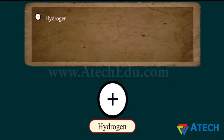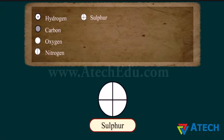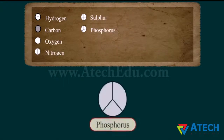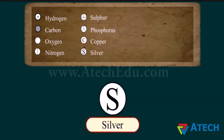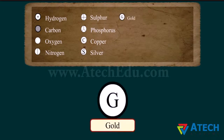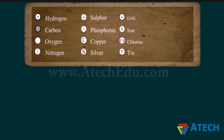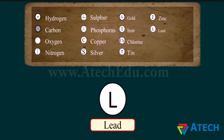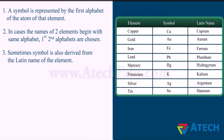IUPAC — the International Union of Pure and Applied Chemistry — has named each element in a scientific manner. A symbol is represented by the first letter of the name of that element. When two elements begin with the same letter, the first two letters are chosen. Sometimes the symbol is derived from the Latin name of the element. These are some elements whose symbols have been derived from their Latin names.